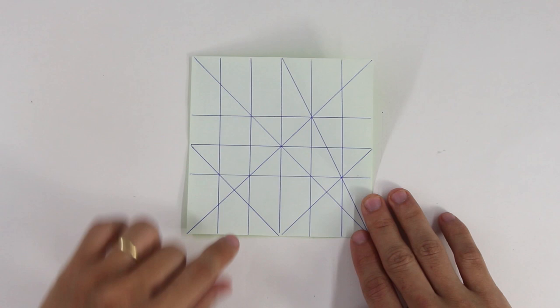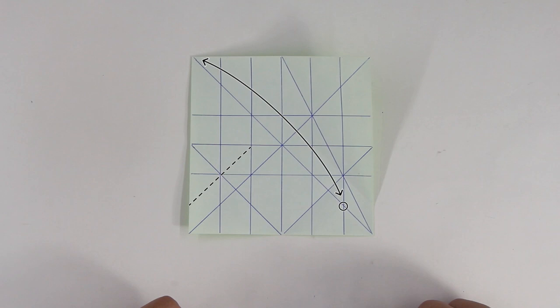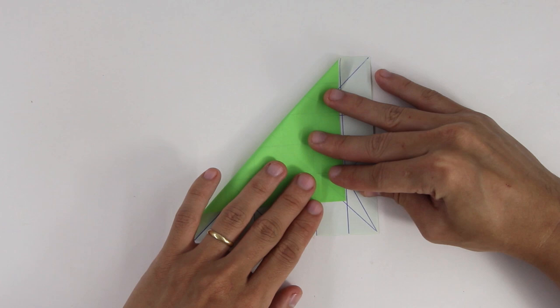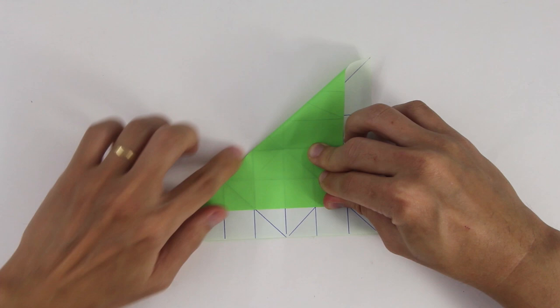Do the same thing to the other direction. These folds are auxiliary folds, so you can make the origami without them, but it's easier if you have them. Do the same thing to the other direction.